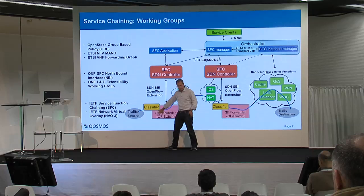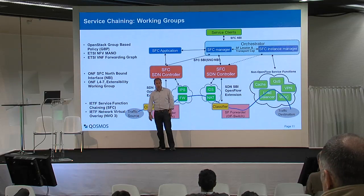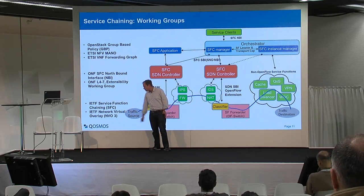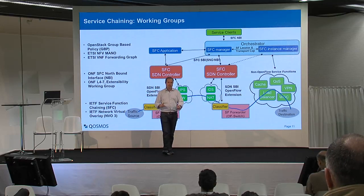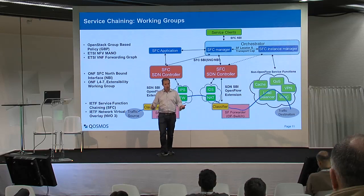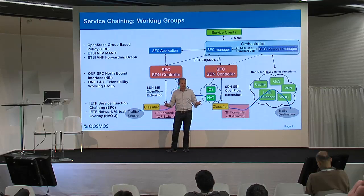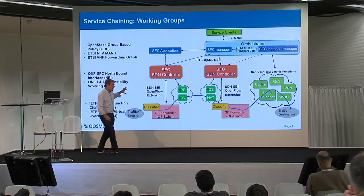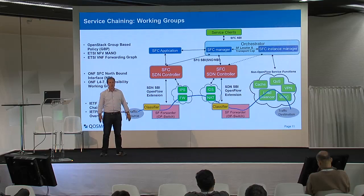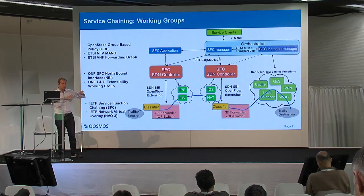At the infrastructure level, you find the IETF service function chaining working group — very active right now — and NVO3, which is about overlay networks where protocols like VXLAN, NVGRE, and Geneve are defined to extend IP packets with chain information, also known as path identifiers. This is what I call the unified model: the result of three different standards organizations converging to a single unified model.